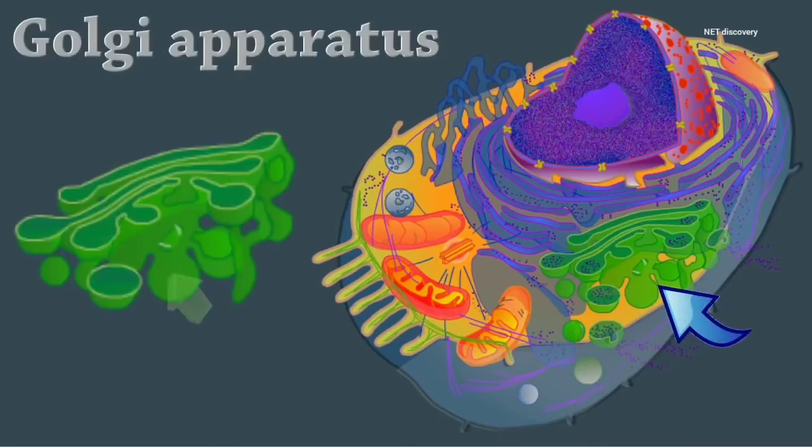Let's start with the Golgi apparatus, also called the Golgi complex or Golgi body. This is a stack of smooth membrane sacs and associated vesicles close to the nucleus.